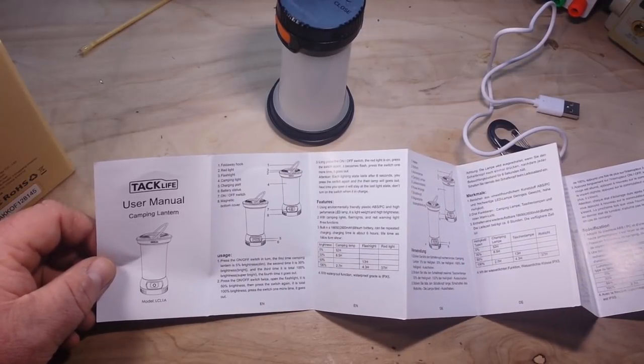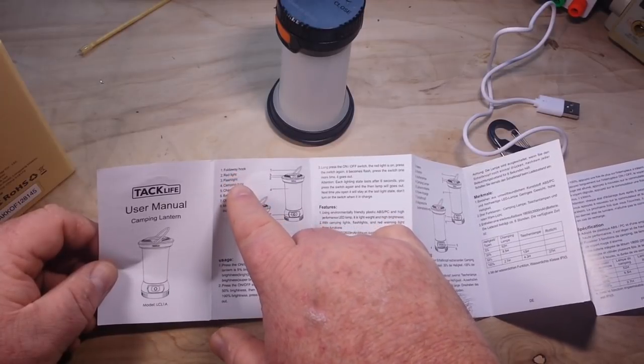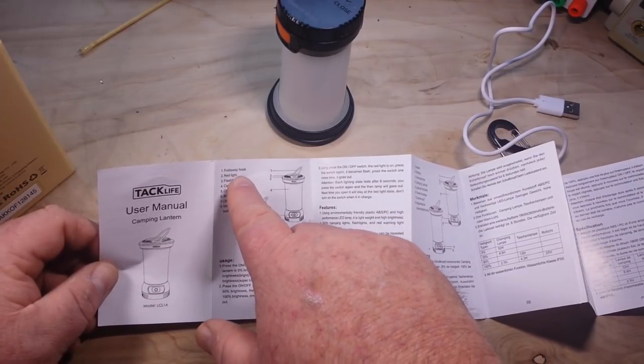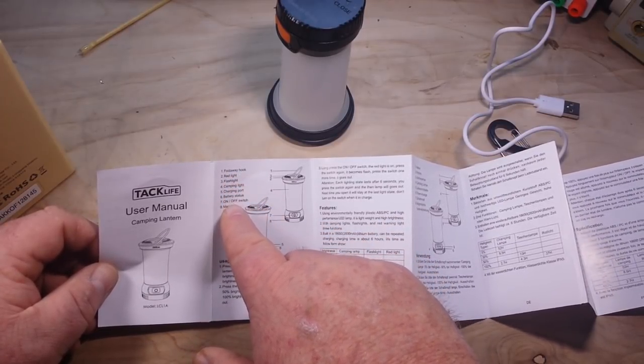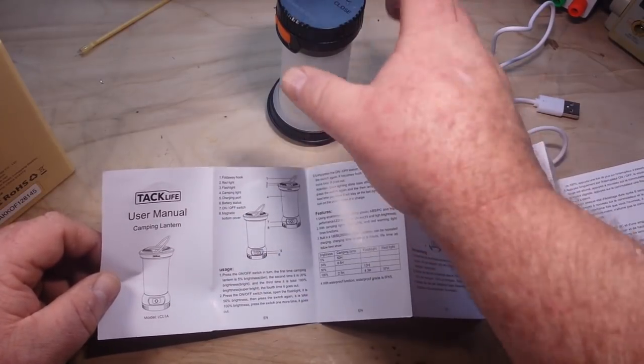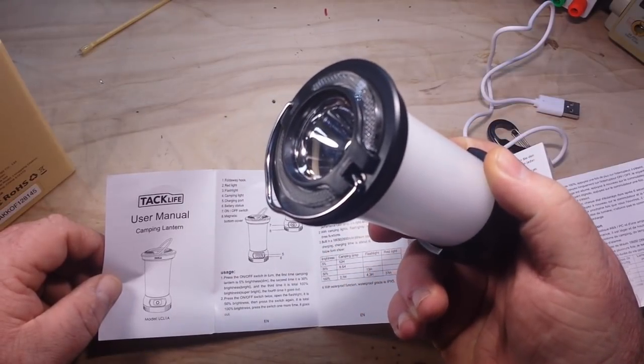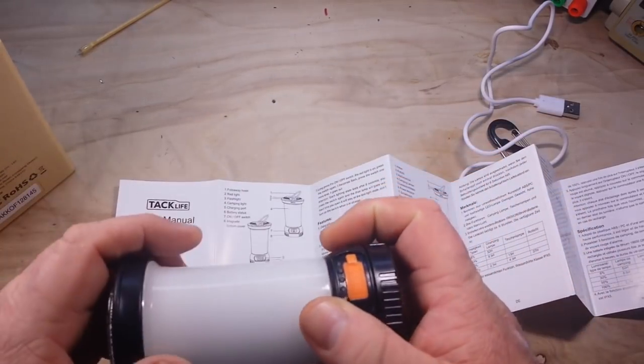Looking at the instruction manual which is in multiple languages, you see here fold away hook, red light, flashlight, camping light, charging port, battery status, on-off switch, magnetic bottom cover.